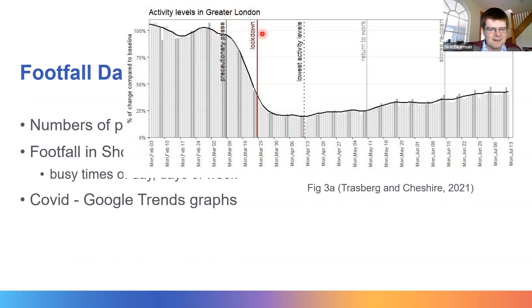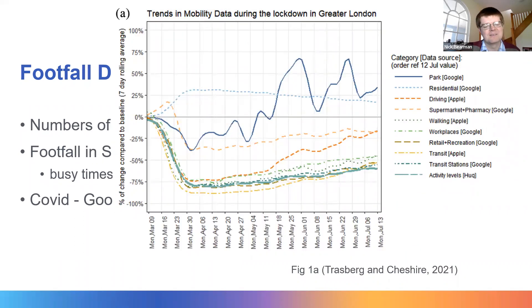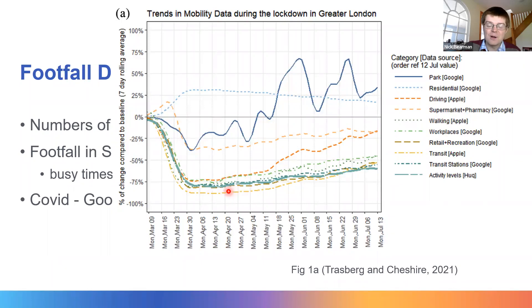Looking at Greater London, we can see the precautionary phase at the beginning of March 2020 and then the formal lockdown towards the end of March, where activity dropped to around 20–25% of normal levels before gradually increasing. More detailed graphs split footfall by location type — parks, residential areas, retail, workplaces, and city centres. Park usage was low initially but came up as we moved into June and July. Supermarkets and driving went down slightly, while workplaces, city centres, and retail fell much more significantly and were generally slower to recover.